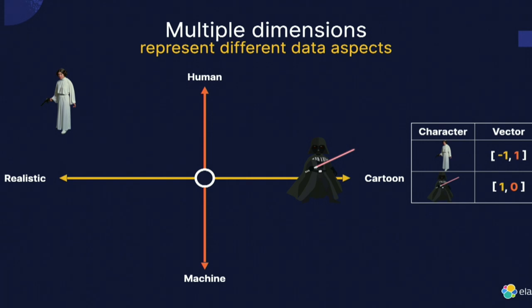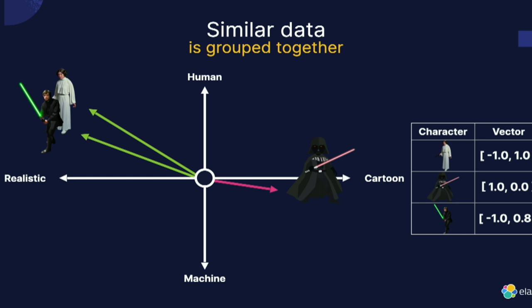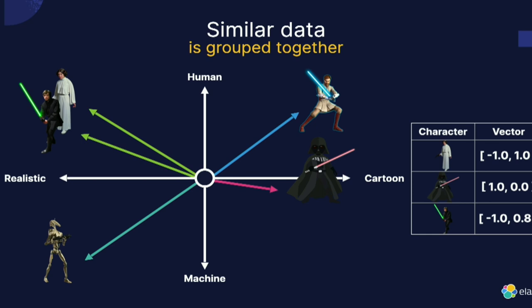Princess Leia is fully human, so her coordinates are minus one, plus one. Darth Vader is half-human, so it's one and zero. We can group more data together — so minus one, zero-point-eight for a machine but in a realistic way, and Obi-Wan Kenobi as human but in a cartoon way. I'm only showing two dimensions here, but you can imagine many more dimensions that can't be represented on a screen.